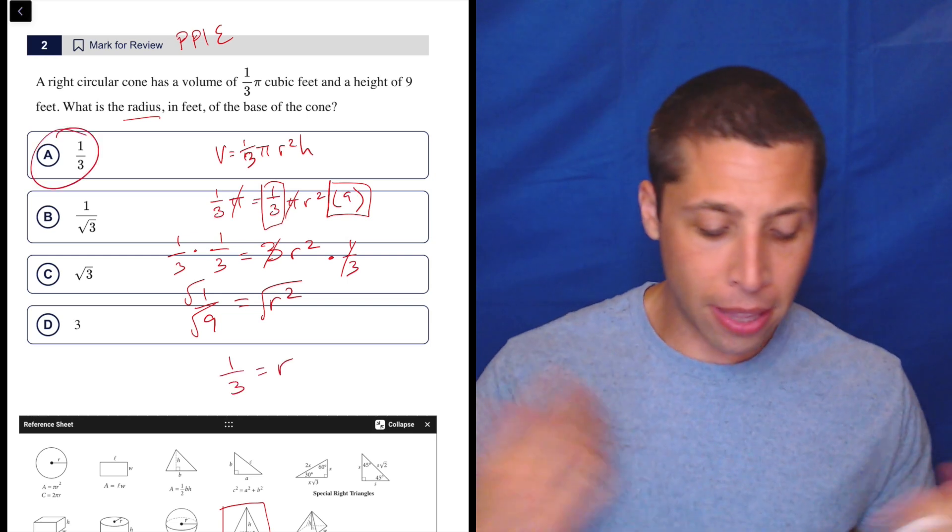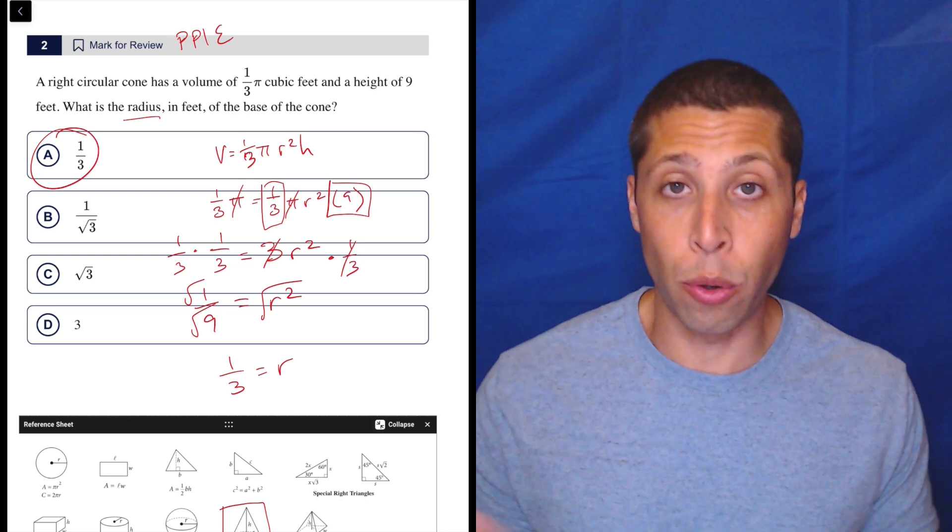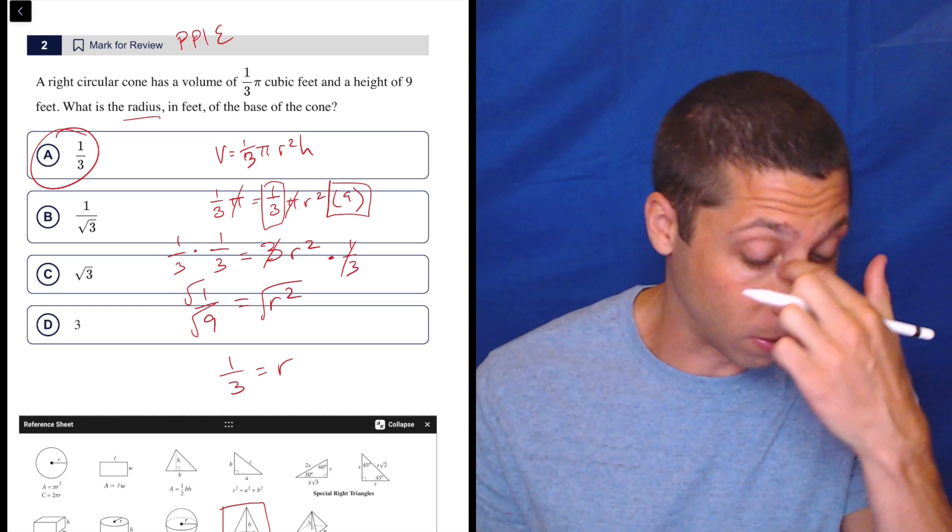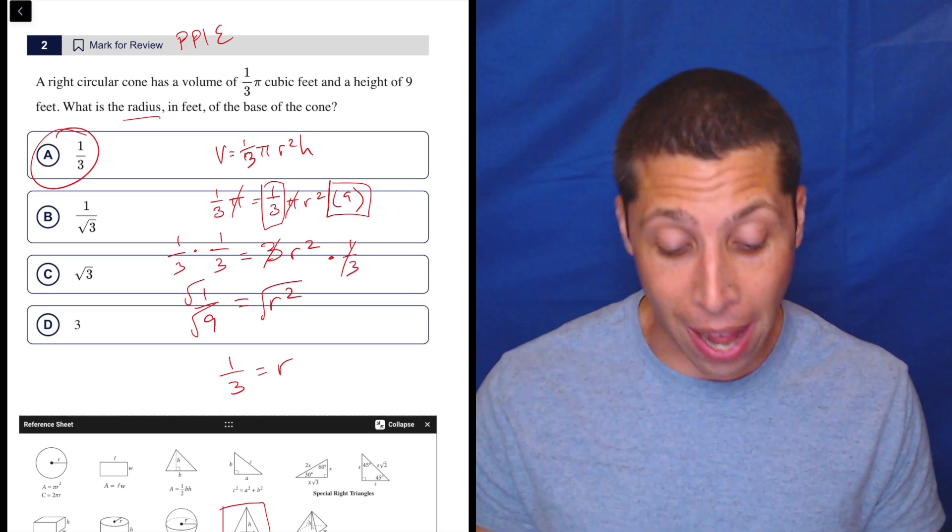That is choice A. But at this point, really at any point, you could have gone to Desmos and actually solved this if you wanted to. You could have even done with the pies and everything like that.